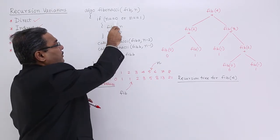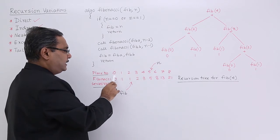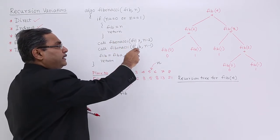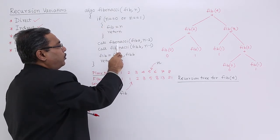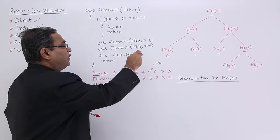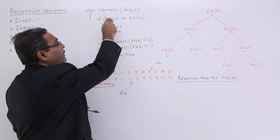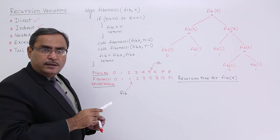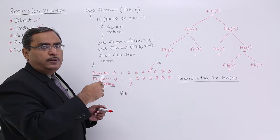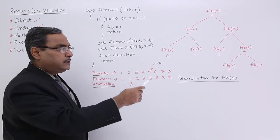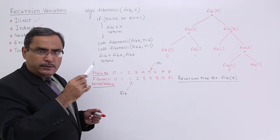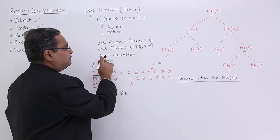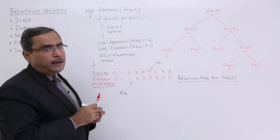If n is equal to 0 or n is equal to 1, that means for the first two places, n is the same as the Fibonacci number. So Fib is equal to n and return. Otherwise, I am calling the same function Fibonacci with n minus 2 and letting the output be Fib a. Then I call the same Fibonacci function with n minus 1, and that value is kept in Fib b. Adding Fib a and Fib b gives the current Fib value. This is how this particular algorithm has been written.